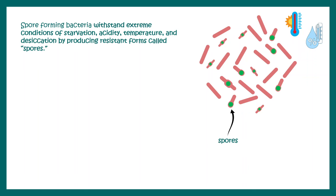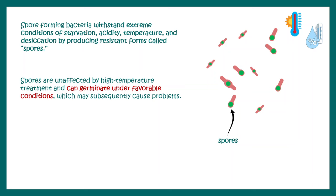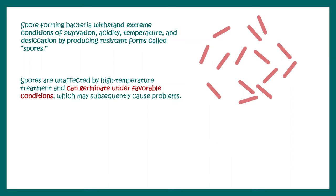Spore-forming bacteria can withstand extreme conditions such as starvation, acidity, temperature, and desiccation by producing these spores. The bacteria would remain hibernated and alive; otherwise, the bacteria would have to die. The spore is really unaffected by high temperature or any other harsh conditions. Whenever temperature is favorable, these spores can germinate and form vegetative cells.